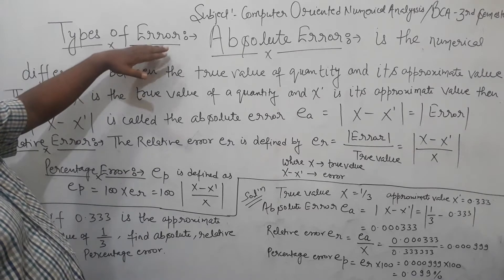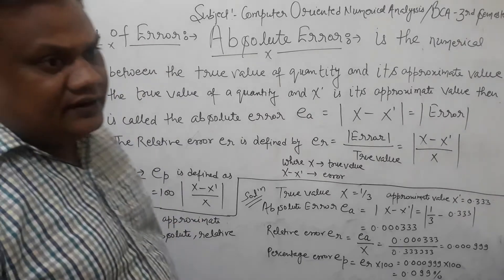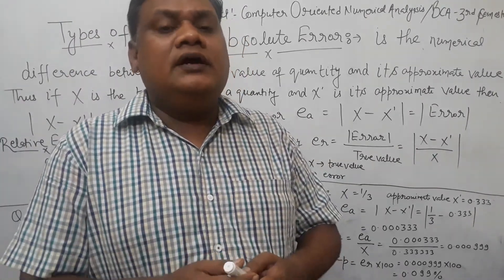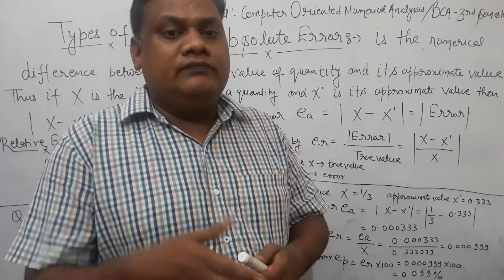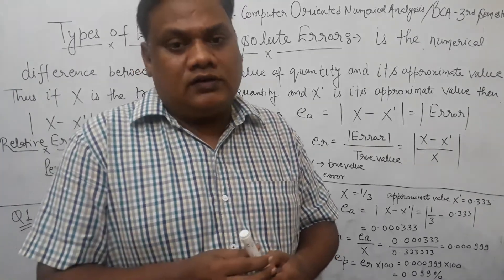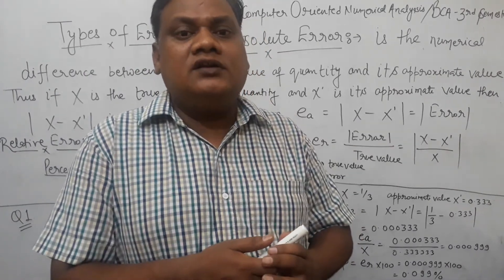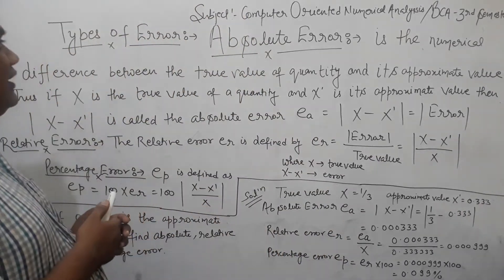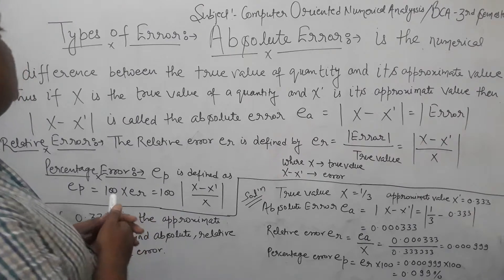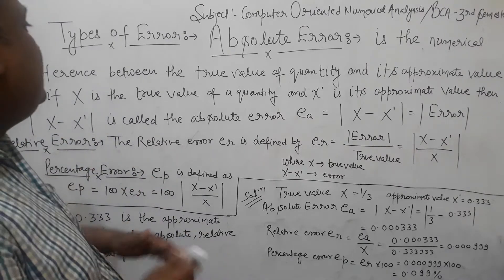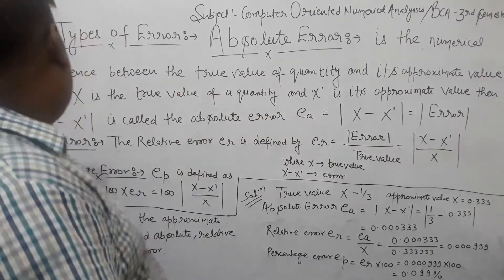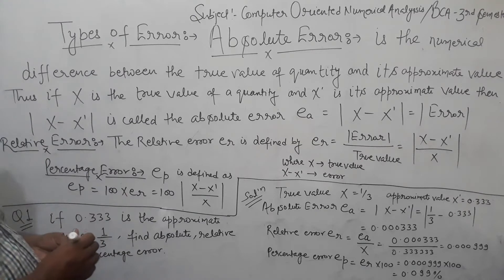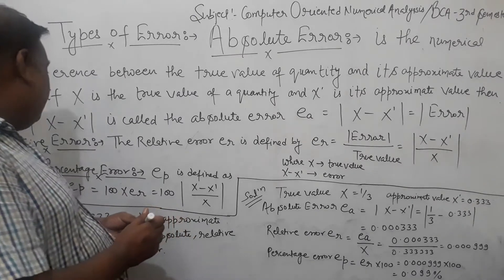We have errors and their types. First we have Truncation Errors — we have seen how values are truncated and how we solve them. So Truncation Error is important. We also have Absolute Errors, which are very important and must be understood. Then the next step is Relative Error and Percentage Errors. These are important errors you need to remember for your exam syllabus.